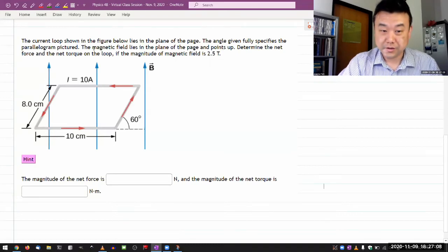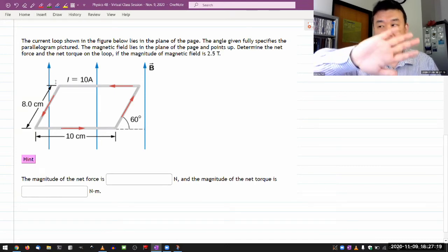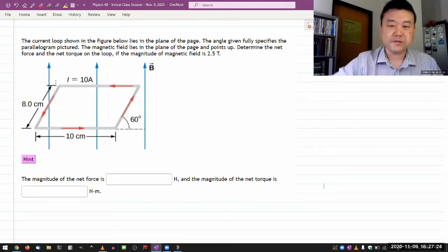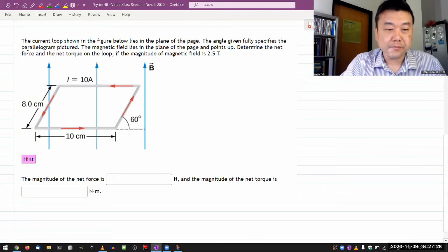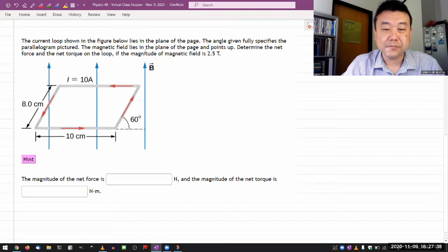It says the current loop shown in the figure below lies in the plane of the page. So this is the literal view of the loop as it appears, it's just flat against the screen. It's not something that's rotated some way. The angle given fully specified, that's why it says parallelogram. It's not a perspective view of a rectangle, it's just a parallelogram. The magnetic field lies in the plane of the page and points up.